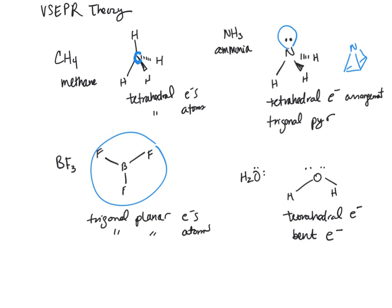Let's do one more example. BeH2. Here we've got no electrons, and that means that we have a linear molecule with a geometry of 180 degrees.